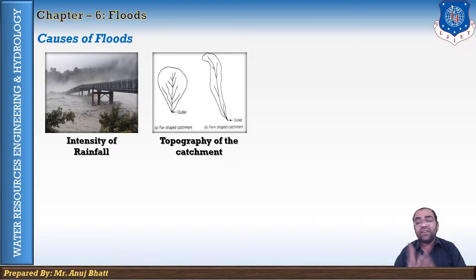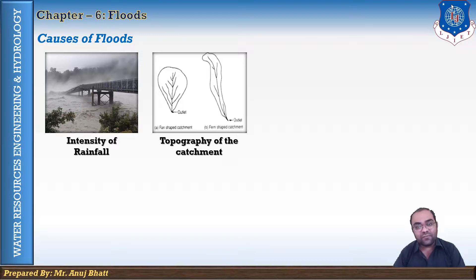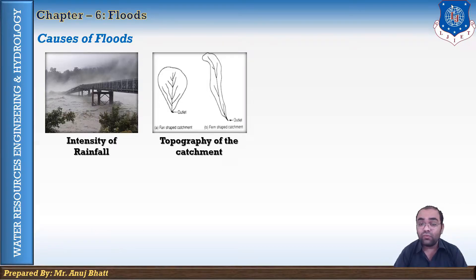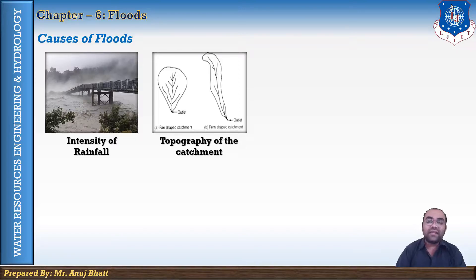The shape of the basin also affects floods. For a fan-shaped catchment, the time of concentration is less, so the storm hydrograph base period is less and the peak flow will be more. In contrast, for an elongated-shaped catchment of equal area under the same storm, the time of concentration is more, the base period is more, and the peak flow is comparatively less. Therefore, the size, slope, and shape of the catchment area directly affect river flow and the resulting floods.